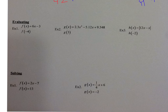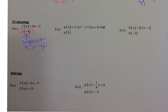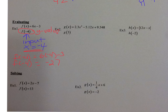Let's take a look at number 1. We have f of x is equal to 6x minus 3, and we're evaluating f of negative 4. So f of negative 4 means x is equal to negative 4 — we're finding the y value when x is negative 4. Wherever I see an x, I plug in negative 4: 6 times negative 4 minus 3. We get f of negative 4 is equal to negative 27. So the input is negative 4 and the output is negative 27.